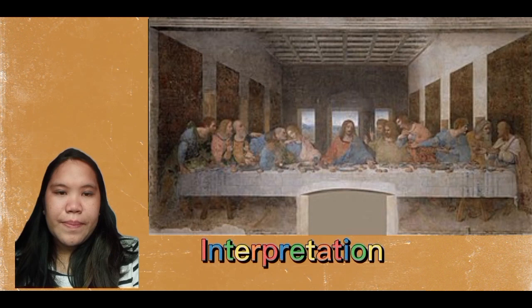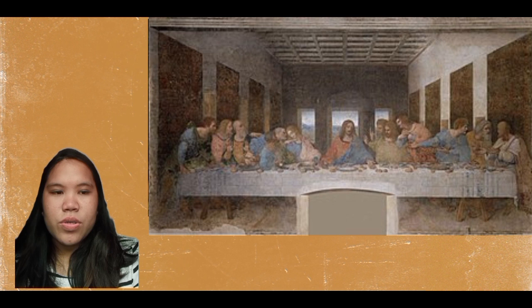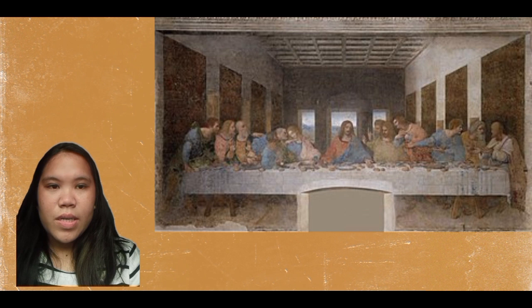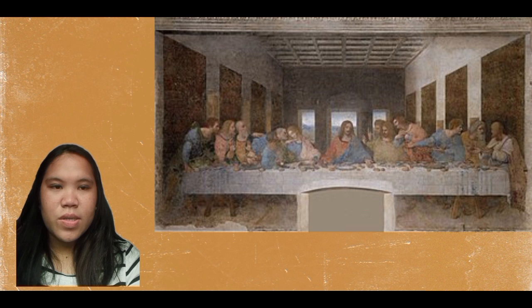The Last Supper serves as a reactionary painting. It is meant to depict the after-effect of Jesus declaring that one of His Apostles will betray Him, followed by the anguished expressions of all His Apostles. The content of this painting also shows Jesus pointing to bread and to wine. The bread symbolizes Jesus' body and the wine symbolizes Jesus' blood.